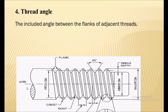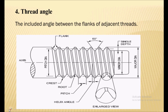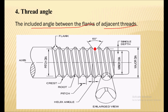Next is the thread angle. Thread angle is the included angle between the flanks of adjacent threads. It is the included angle between the flanks, which is 60 degrees in this case.